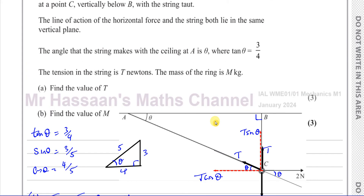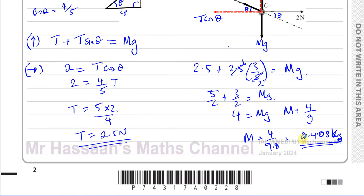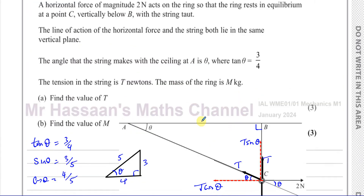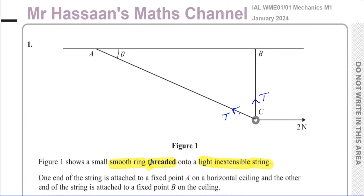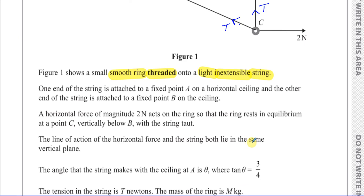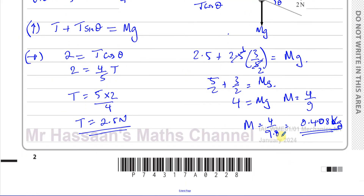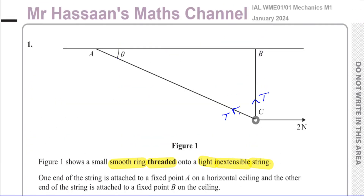So T = 2.5 N and m = 0.408 kg — that's the answer to question one. Key points to remember: the ring is smooth giving equal tension on both sides, and there's no reaction force between the ring and the string because the string is not rigid. Other questions from this paper and from the statics topic will be in the playlist, along with a special playlist for rings. Thanks for watching.